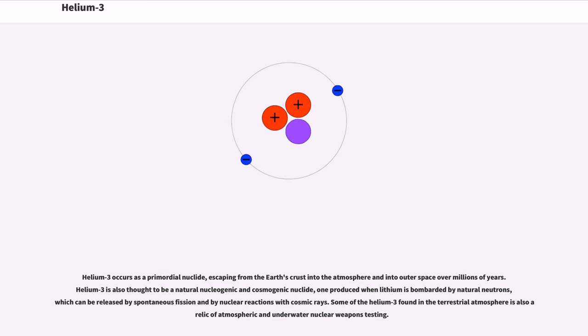Helium-3 occurs as a primordial nuclide, escaping from the Earth's crust into the atmosphere and into outer space over millions of years. Helium-3 is also thought to be a natural nucleogenic and cosmogenic nuclide, one produced when lithium is bombarded by natural neutrons, which can be released by spontaneous fission and by nuclear reactions with cosmic rays. Some of the helium-3 found in the terrestrial atmosphere is also a relic of atmospheric and underwater nuclear weapons testing.